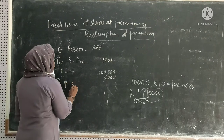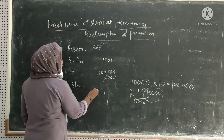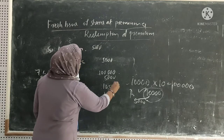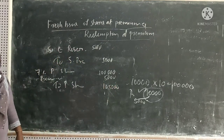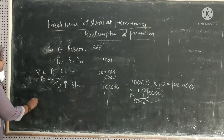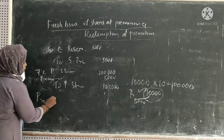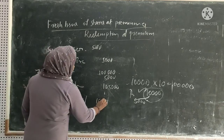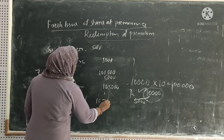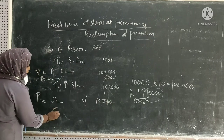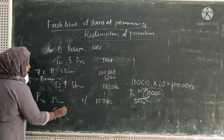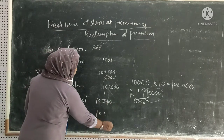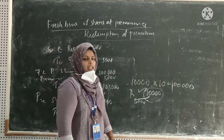Preference shareholders: one lakh five thousand. This is the difference. Preference shareholders account: one lakh five thousand. Bank amount: one lakh five thousand. This is the difference.